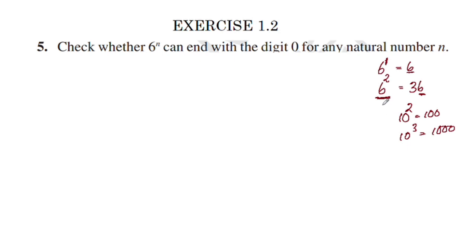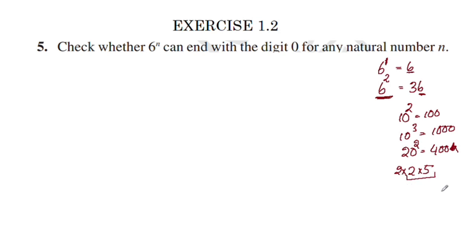What factors do we need? We need 2 and 5. For example, 20 squared gives 400. The number 400 has factors 2 and 5, so the last digit is 0. Similarly, 30 equals 2 times 3 times 5, which also contains both 2 and 5.